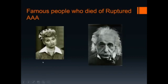These are two famous people who died of ruptured aortic aneurysm. On the right is the scientist Albert Einstein; on the left is the entertainer Lucille Ball.